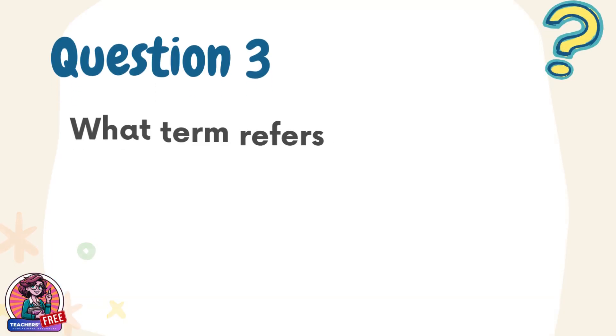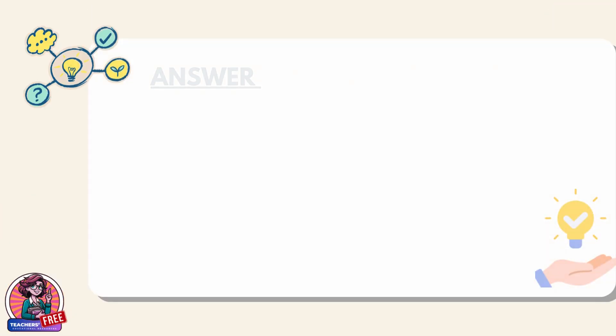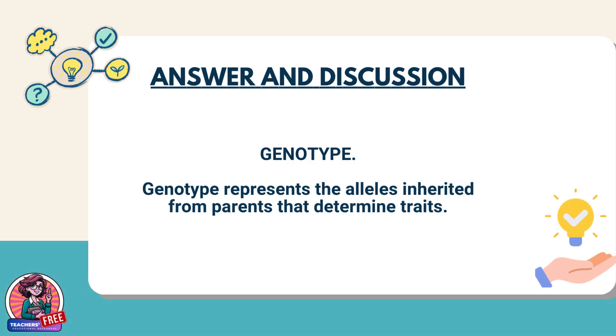Question 3. What term refers to the genetic makeup of an organism? Answer: Genotype. Genotype represents the alleles inherited from parents that determine traits.